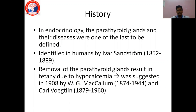In the history of endocrinology, the parathyroid glands and their diseases are one of the last to be defined. The gland itself was first discovered in the Indian rhinoceros in the year 1850, and later it was identified in humans by Ivar Sandström. McCallum and Carl Voegtlin in 1908 suggested that removal of the parathyroid glands results in tetany due to hypocalcemia, thus elucidating its function in the body.